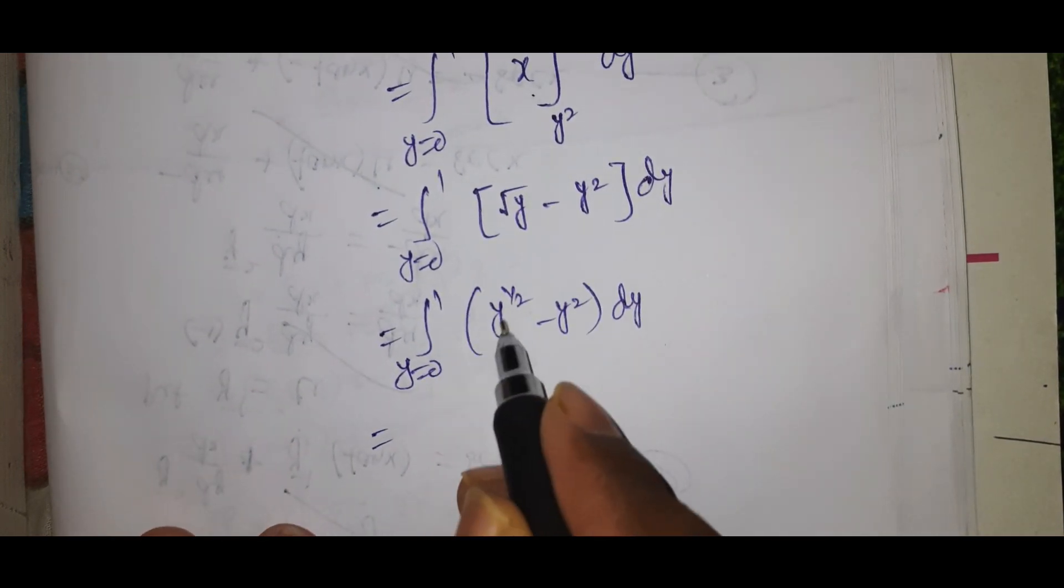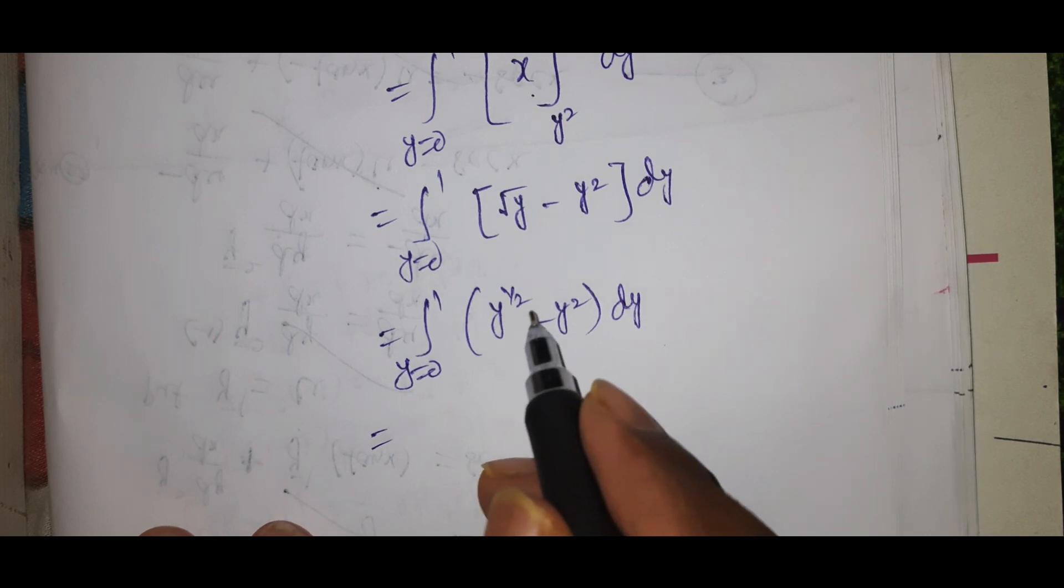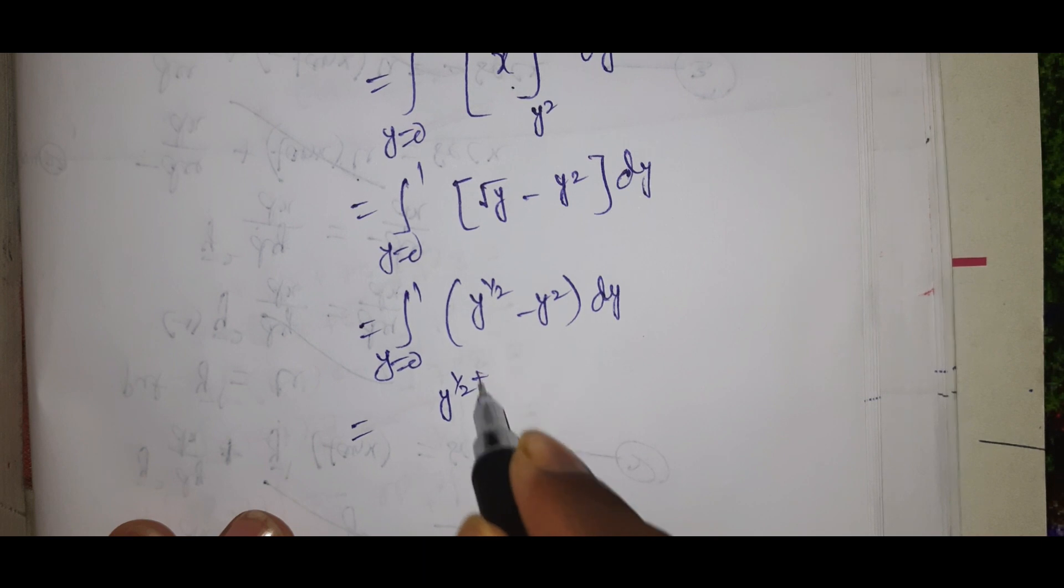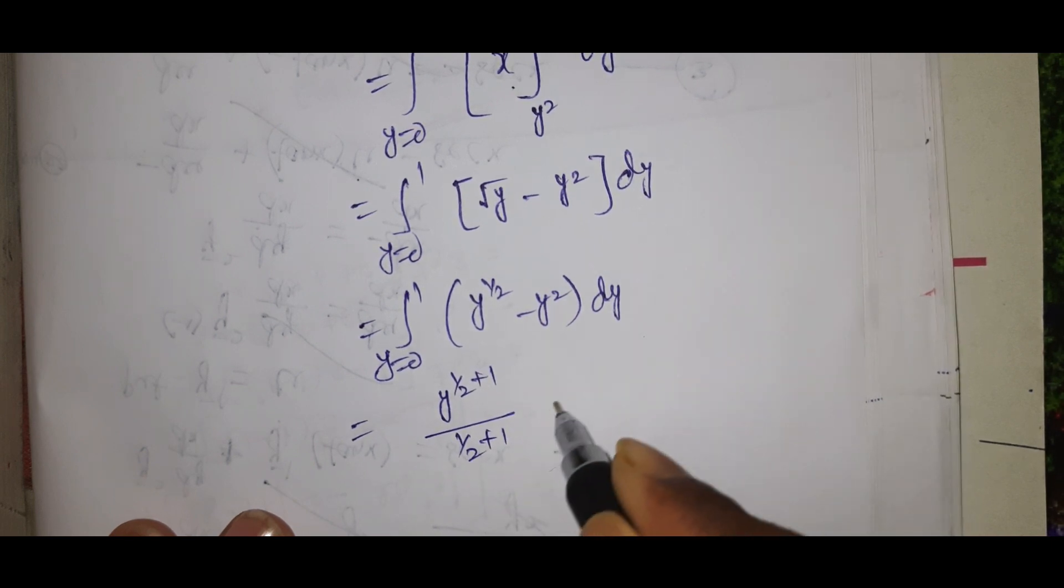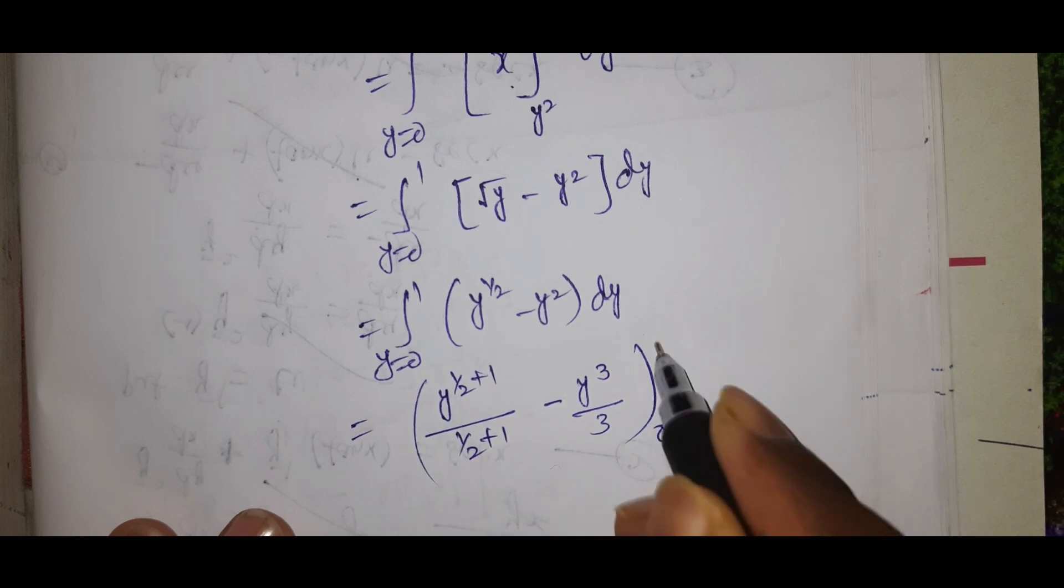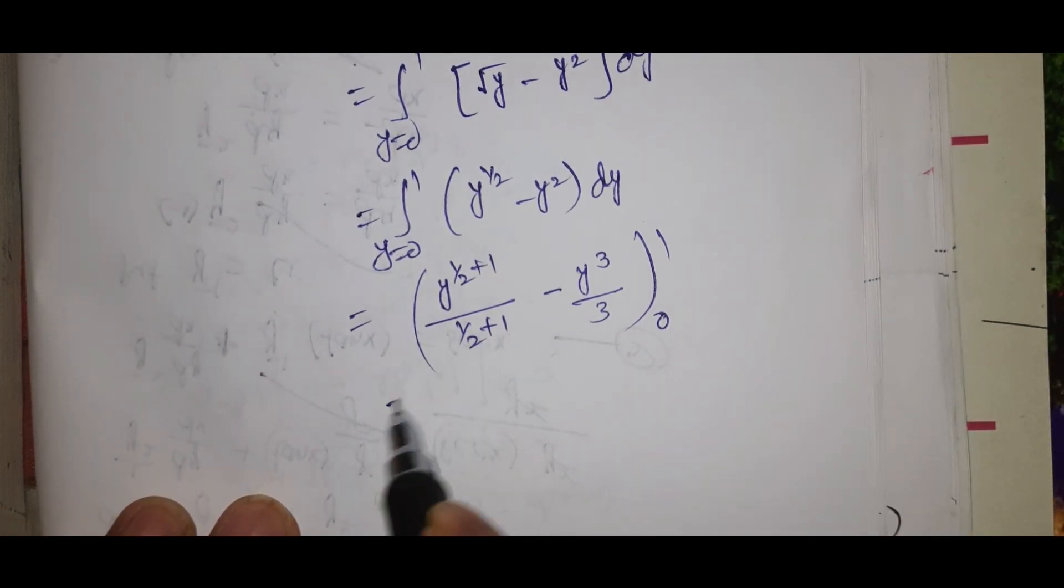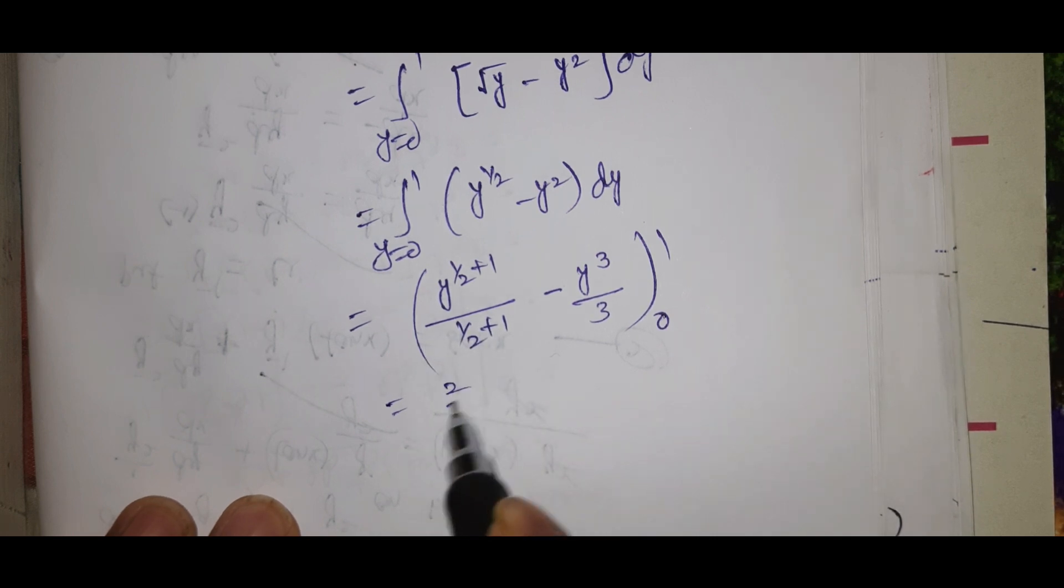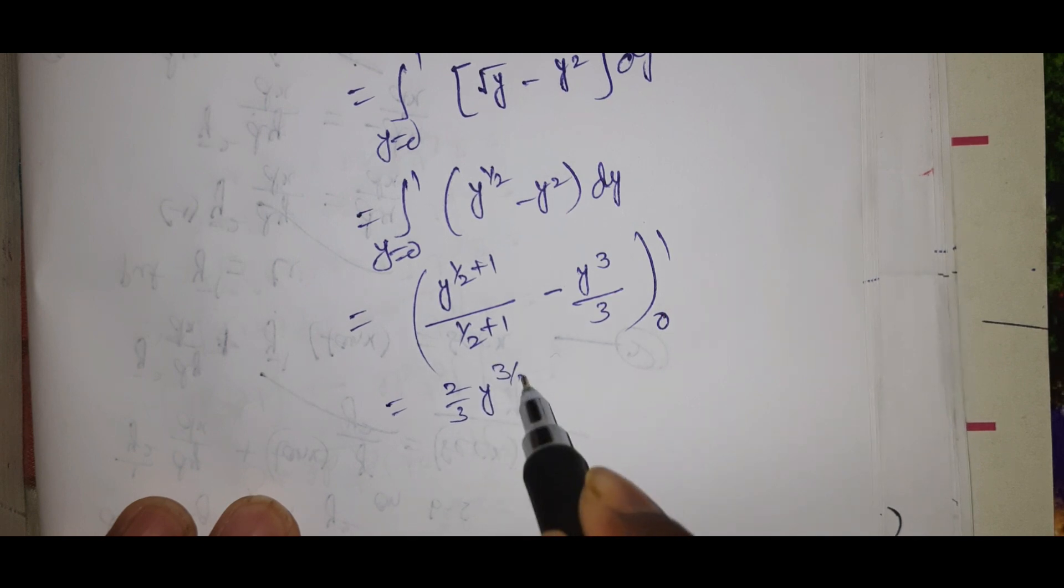Integral from 0 to 1 of y^(1/2) - y² dy. Using the power rule, integral of x^n is x^(n+1)/(n+1), we get [y^(3/2)/(3/2) - y³/3] from 0 to 1, which equals [2y^(3/2)/3 - y³/3] from 0 to 1.